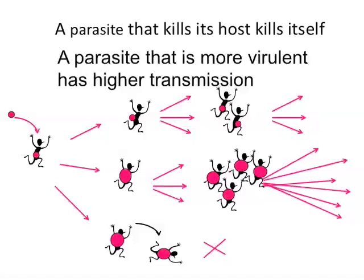The idea, as Troy has elaborated, is that there's a trade-off between the pathogen's virulence and its transmission. The problem for a pathogen is that if it kills its host, then it kills its onward transmission. So that's a fitness cost to the parasite — it shouldn't do that. And yet many parasites do that.